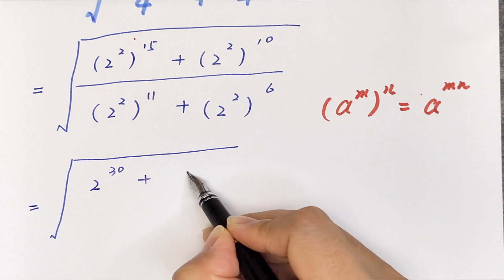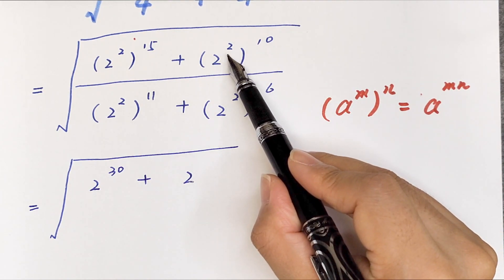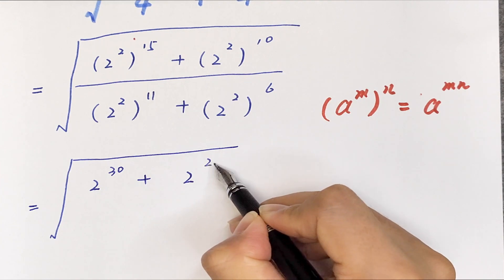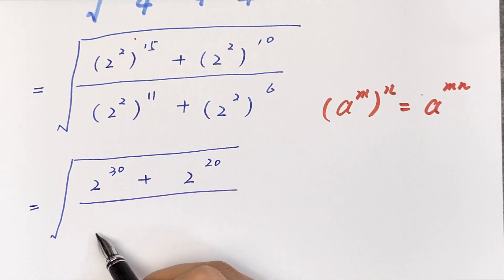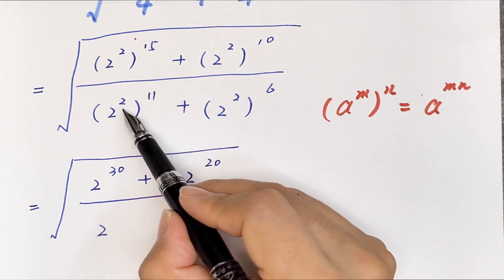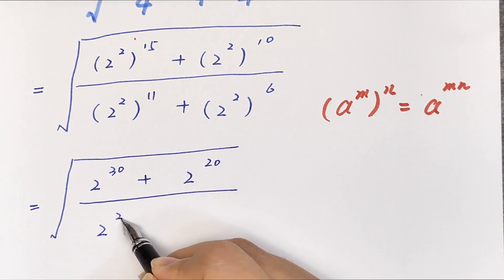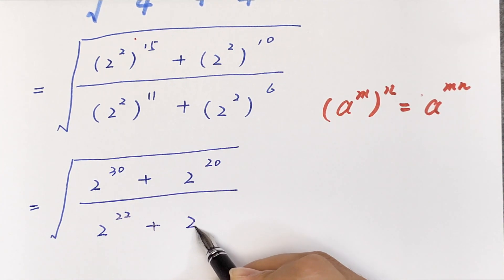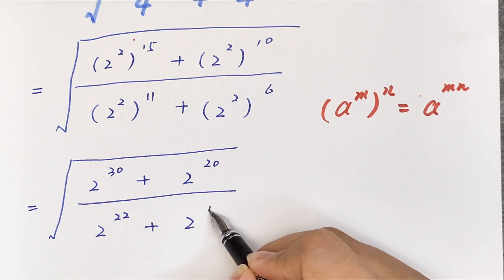In the denominator: 2 to the power of 2×11 equals 2 to the power of 22, plus 2 to the power of 2×6 equals 2 to the power of 12.